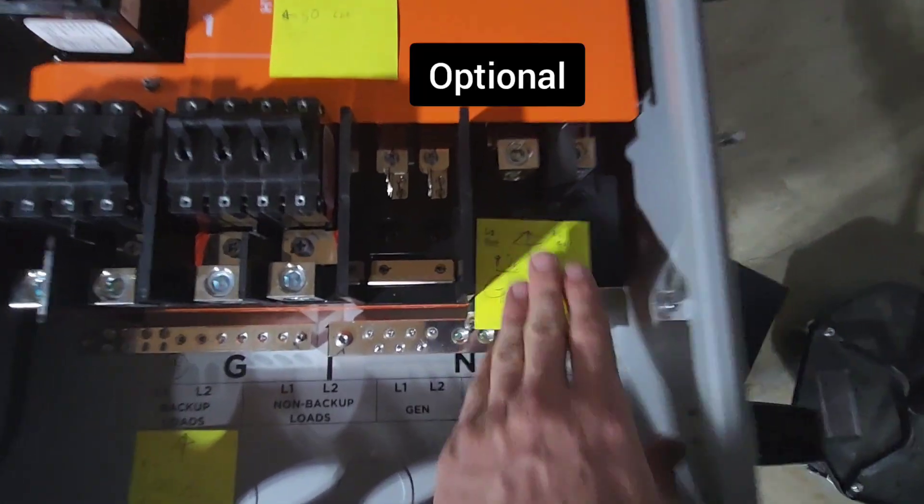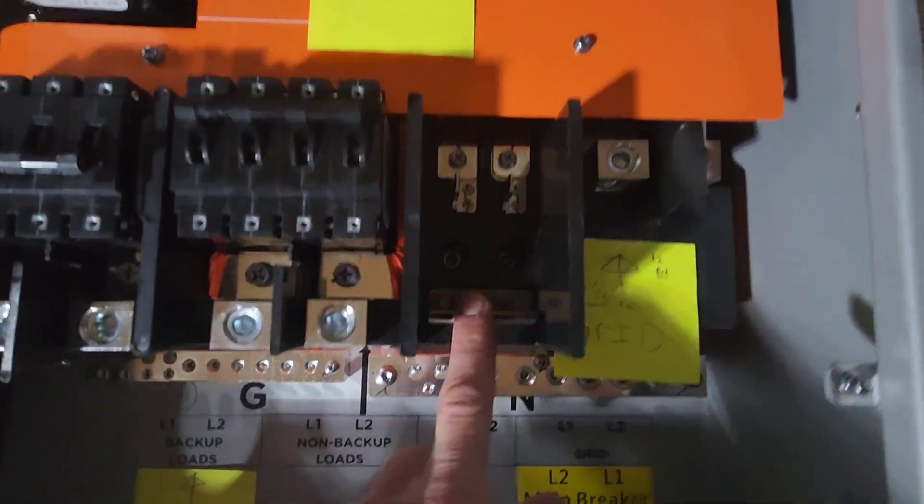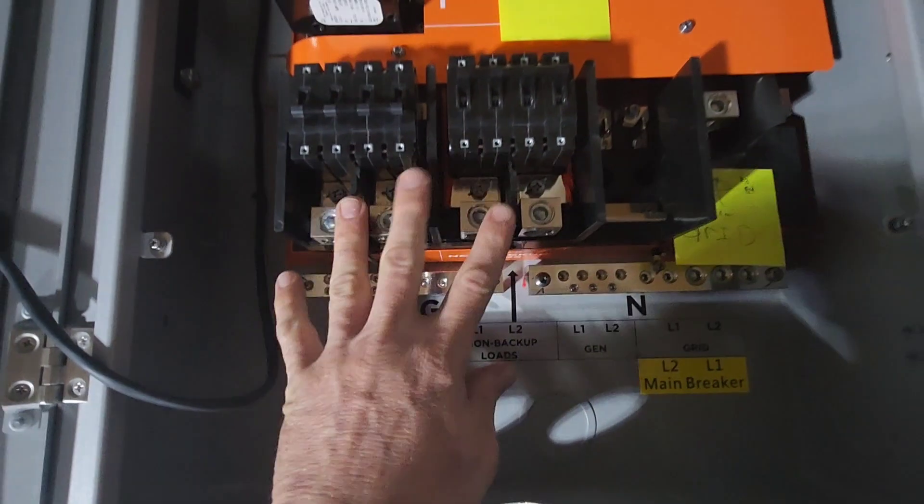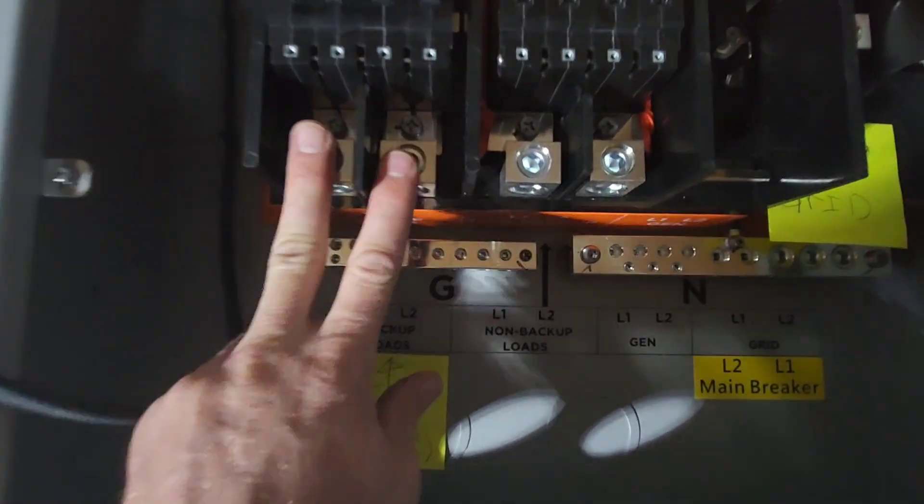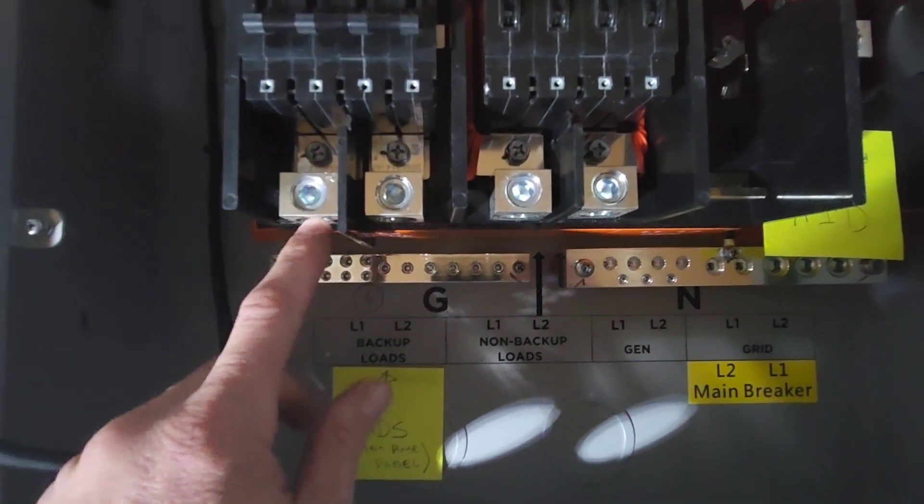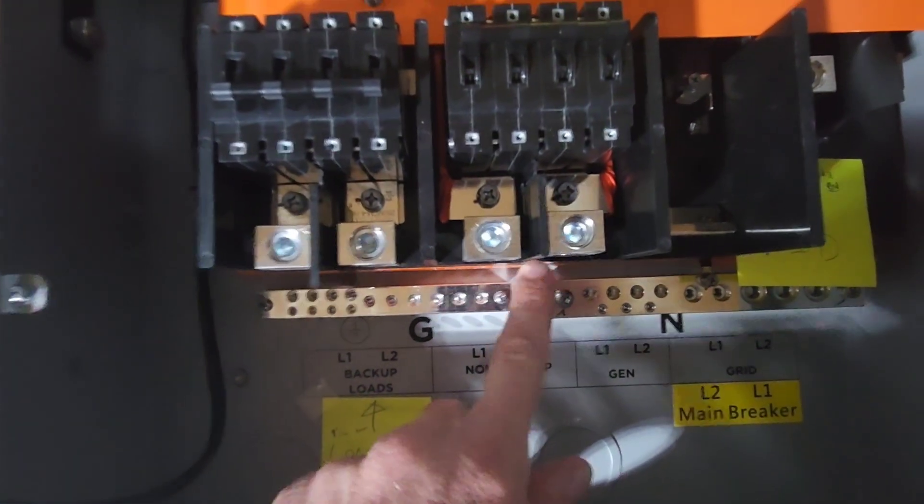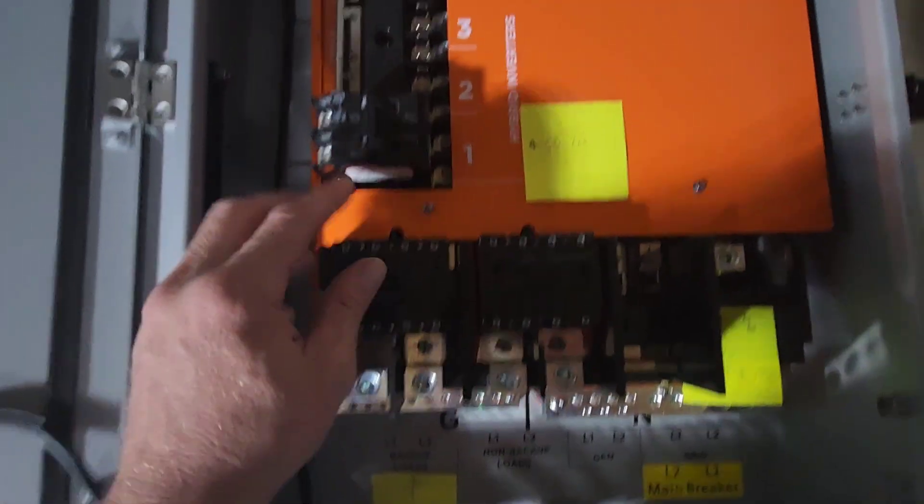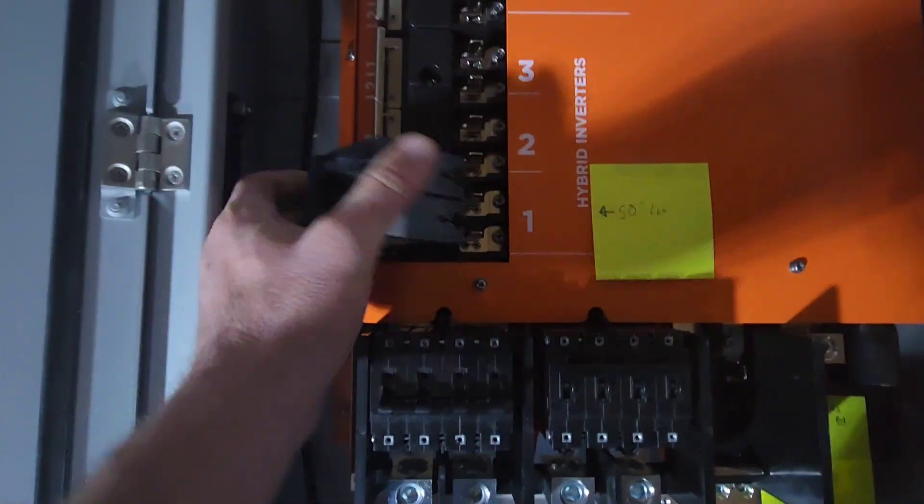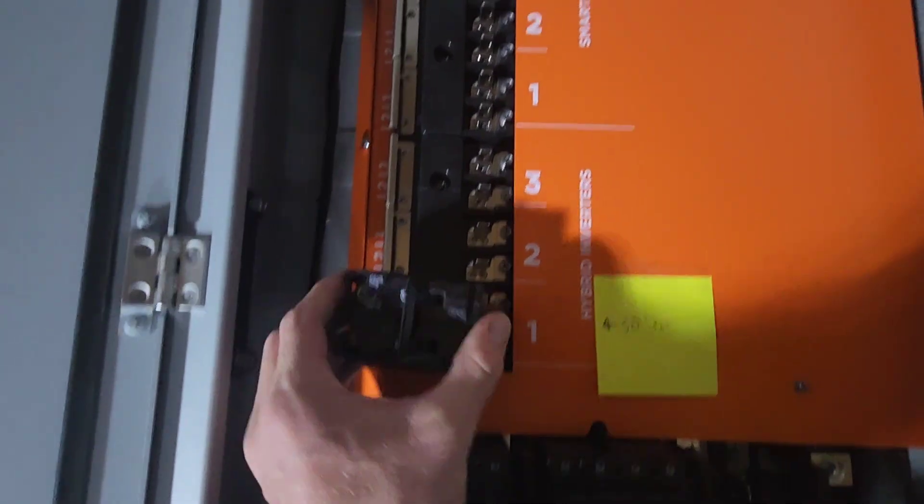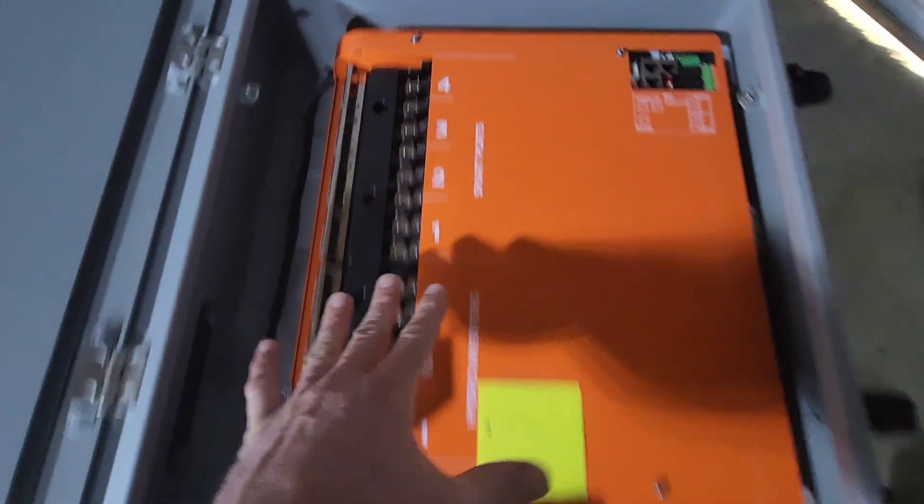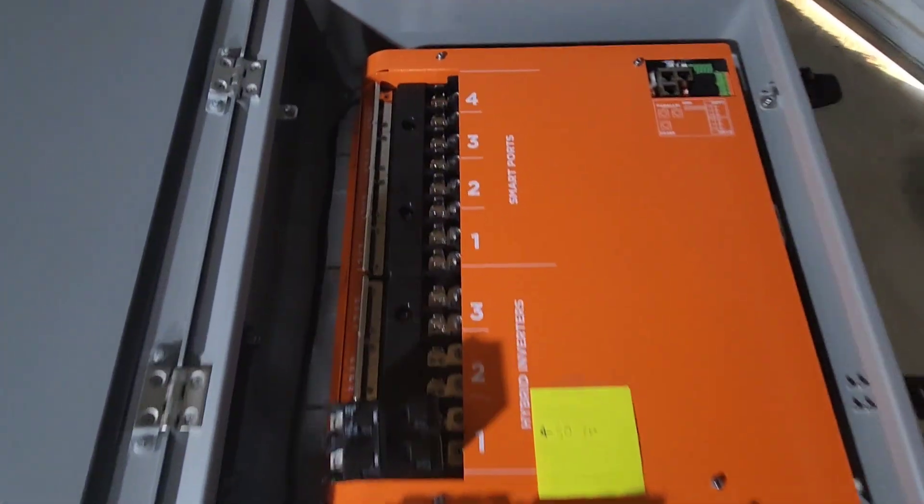This is where your grid goes in, and you can add a breaker here for the service disconnect. And here's where a generator can connect in. You can add a breaker for your generator, clip it on here. Here are some terminals for my loads right here. If you want a non-critical loads sub panel, I'm just going to back up my entire house as my backup loads. I'm not going to have a non-critical loads sub panel. And then there's a bunch of different slots where you can add your breakers, clip them on, or smart ports.